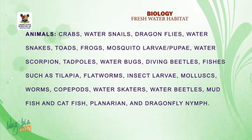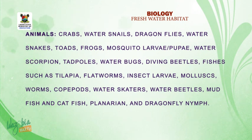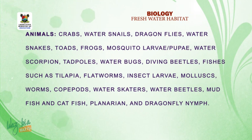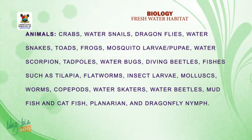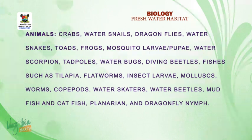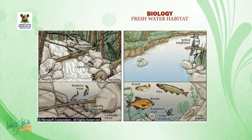Examples of animals include crabs, water snails, dragonflies, water snakes, toads, frogs, mosquito larvae, water scorpions, tadpoles, water bugs, diving beetles, bony fishes like tilapia, flatworms, sea insects, larvae, mollusks, worms, copepods, water skaters, water beetles, mudfish, catfish, planarians, and dragonfly nymphs. The diagram shows most of these animals.